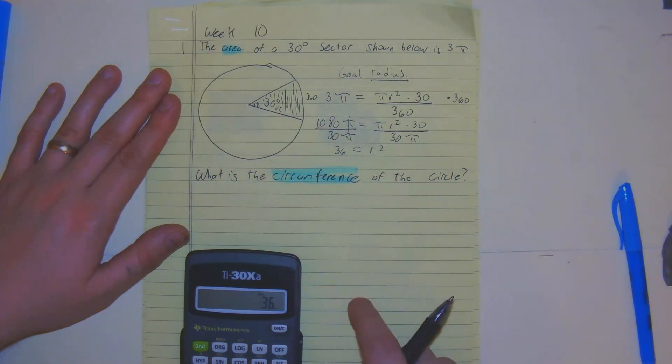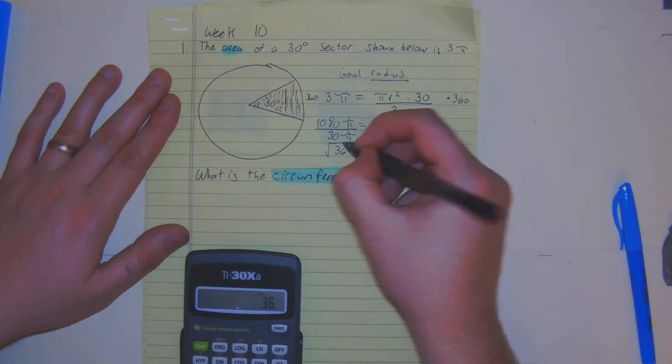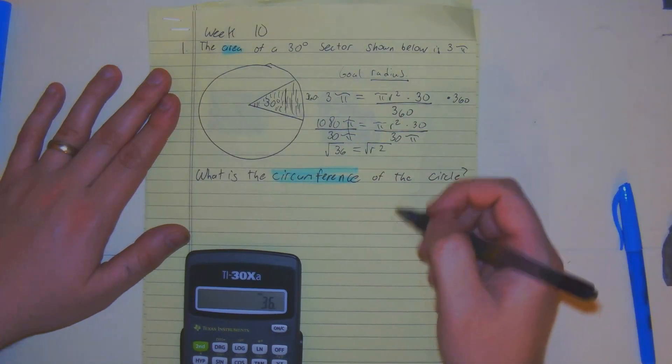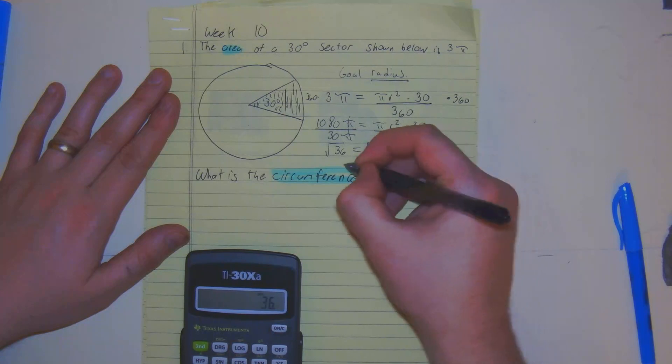The inverse of a square is a square root. We get r is equal to 6.